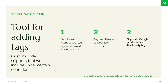Tag Manager also gives you a way to categorize, name, and version-control your tags. You can add them, test them with a debugging tool, and make sure they're working before publishing them live. You also get access to templates made by other users and companies, and collaboration features so you can give access to other people at your organization — like marketing firms or ad agencies — to add and manage tags on your behalf.